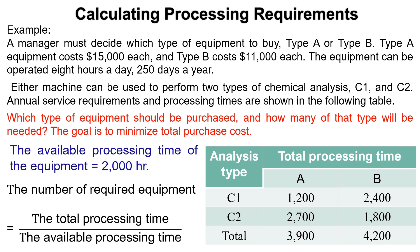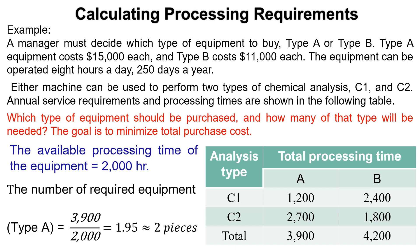After that, calculate the required equipment of each type by dividing the total processing time for each machine by the available processing time. For Type A equipment, the required equipment equals 3,900 divided by 2,000, which equals 1.95, approximately 2 pieces of equipment. For Type B equipment, the required equipment equals 4,200 divided by 2,000, which equals 2.1, approximately 3 pieces of equipment.